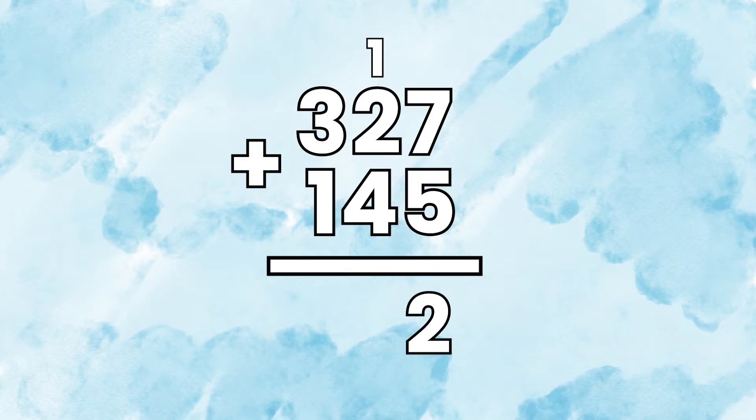4 plus 2 plus 1 equals 7. Then we're going to go to the 100's column. 3 plus 1 equals 4. So our answer is 472.